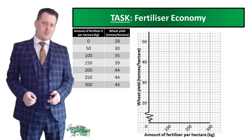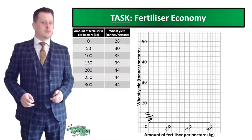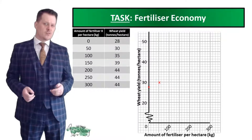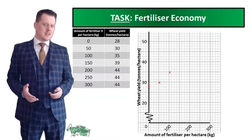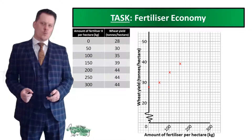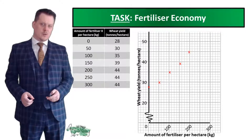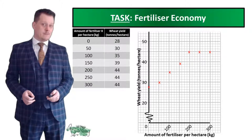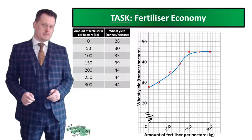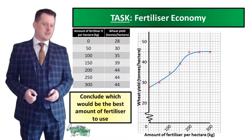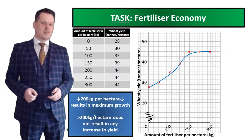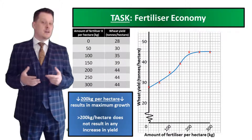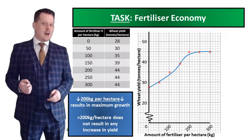Now plot the points. With 0 fertilizer the yield is 28; at 50 it rises to 30; at 100 it increases to 35; at 150 it becomes 39; at 200 it reaches 44. Increasing fertilizer further to 250 and 300 keeps the yield at 44. Draw a smooth curve through these points. The conclusion is that 200 kg per hectare gives the maximum yield — there's no point using 250 or 300 as it costs more money without any increase in yield.